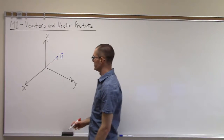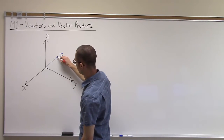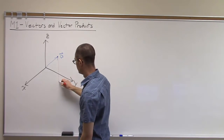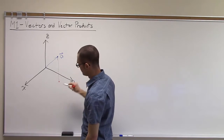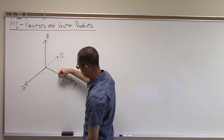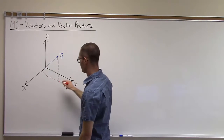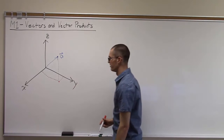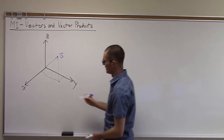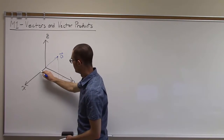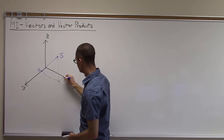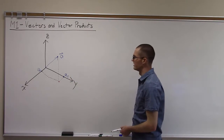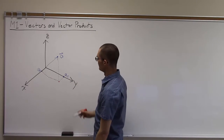That vector has three scalar components. If I take a projection of that point down onto the x-y plane, and then project that point back to the x-axis parallel to the y-axis, and then back to the y-axis, I can get the x and y components of A. I call those Ax and Ay.